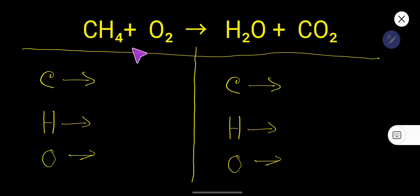How to balance CH4 plus O2 that produces H2O plus CO2. On the left-hand side, the number of carbon is 1, the number of hydrogen is 4, the number of oxygen is 2. On the right-hand side of the products, the number of hydrogen is 2, the number of oxygen here is 1.